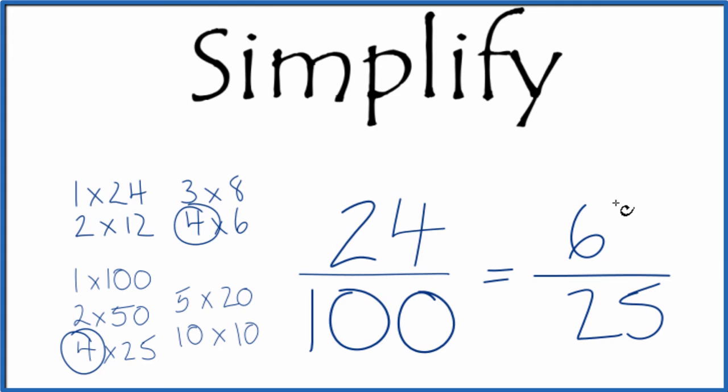So we end up with the fraction 6 twenty-fifths and we can't reduce this any further. These are equivalent fractions. If you divide 6 by 25 or 24 by 100 you get the same answer. It's just that we've simplified or reduced 24 over 100 down to 6 over 25.